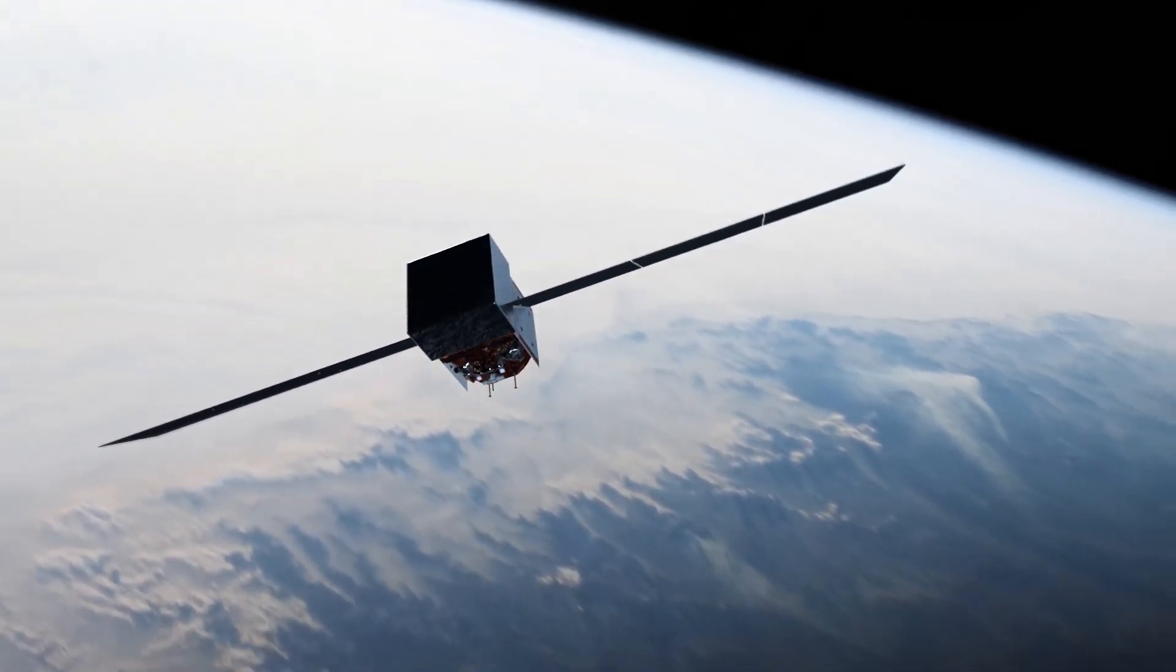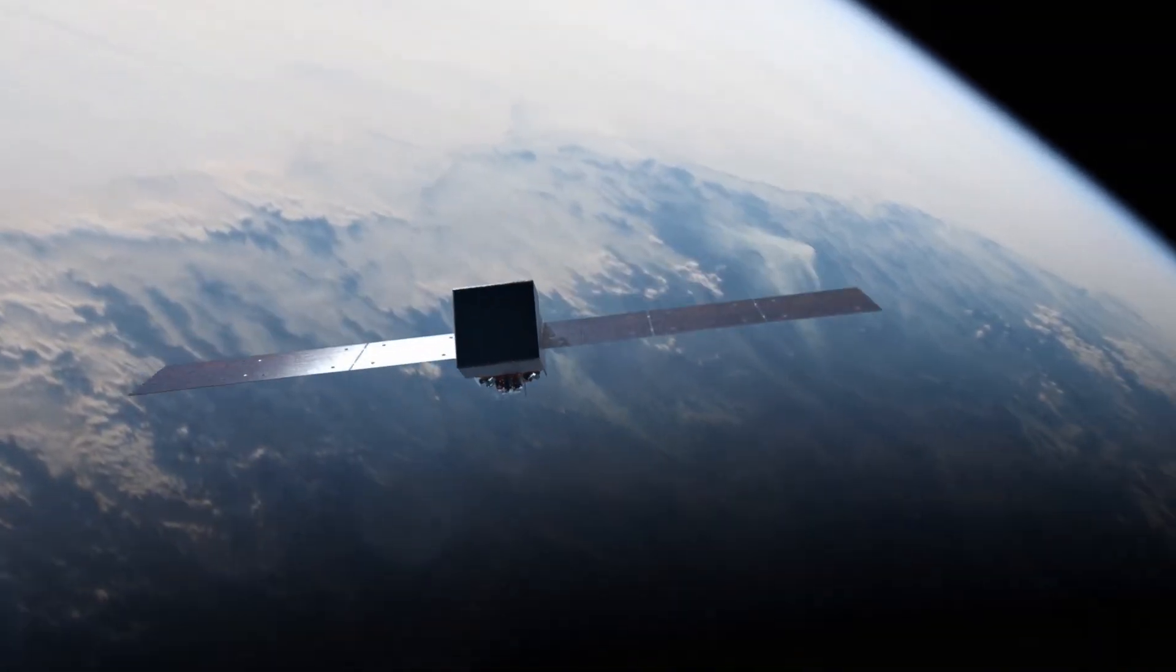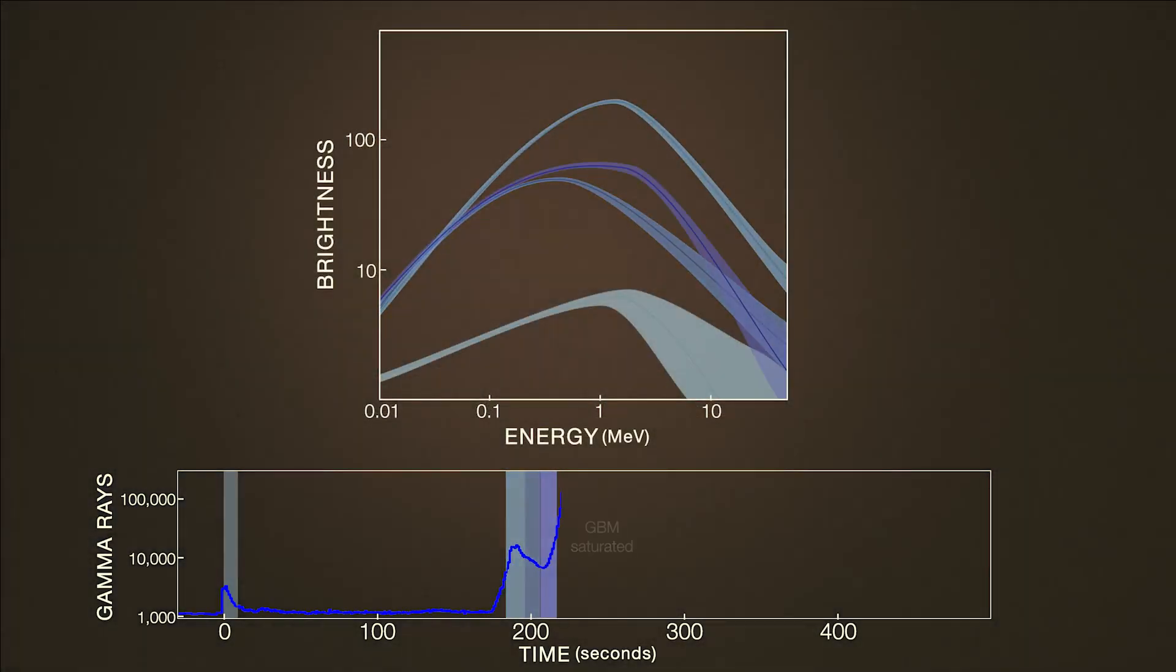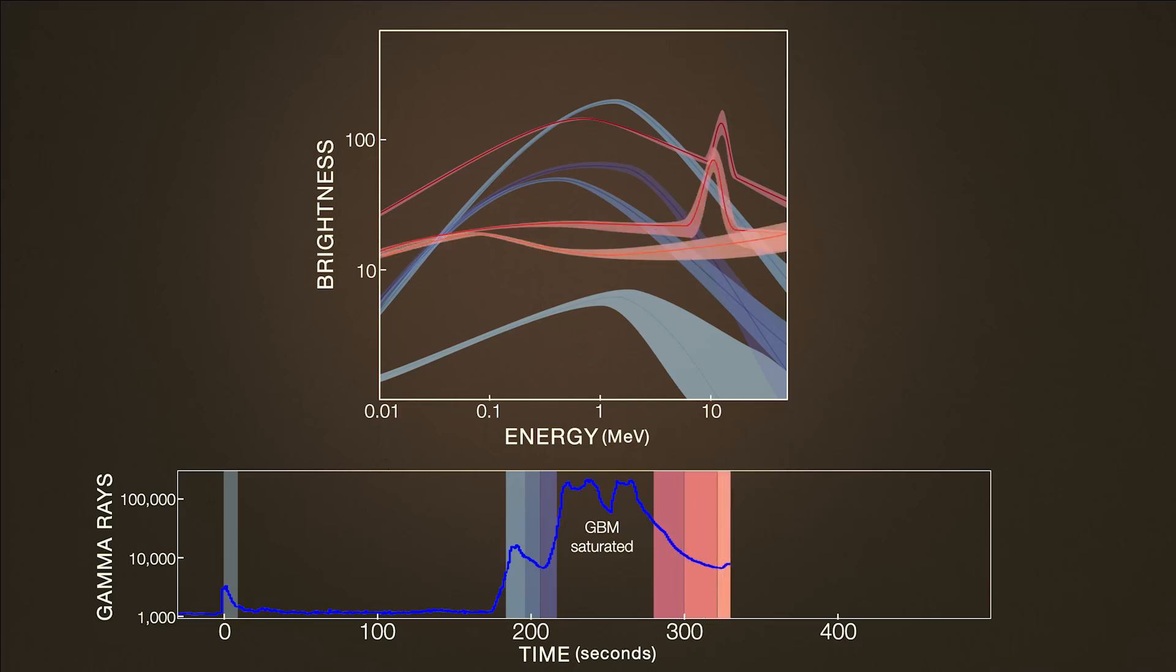NASA's Fermi Observatory carries instruments specifically designed for studying these explosions. Its gamma-ray burst monitor was saturated by the BOAT's initial flash, but was fine a few minutes later. And it's in that data, around five minutes into the event, that scientists found something new.